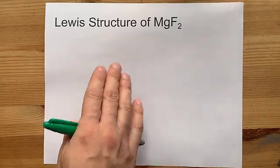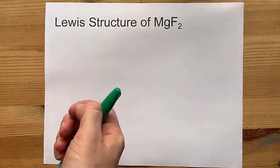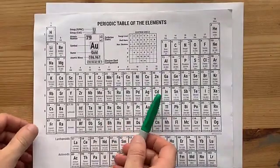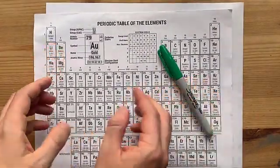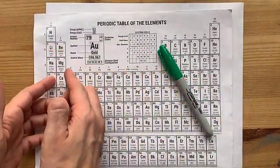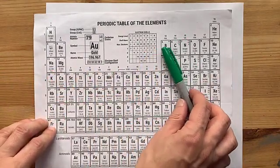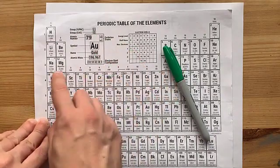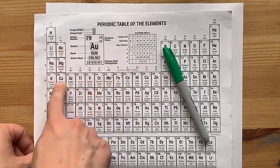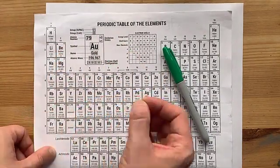Would you like to help me draw the Lewis structure of magnesium fluoride? Sure you would. Magnesium is a metal. I know that because it's on the left side of the periodic table, specifically left of this staircase. Hydrogen is an exception to that rule, but magnesium is definitely one of the alkaline earth metals.